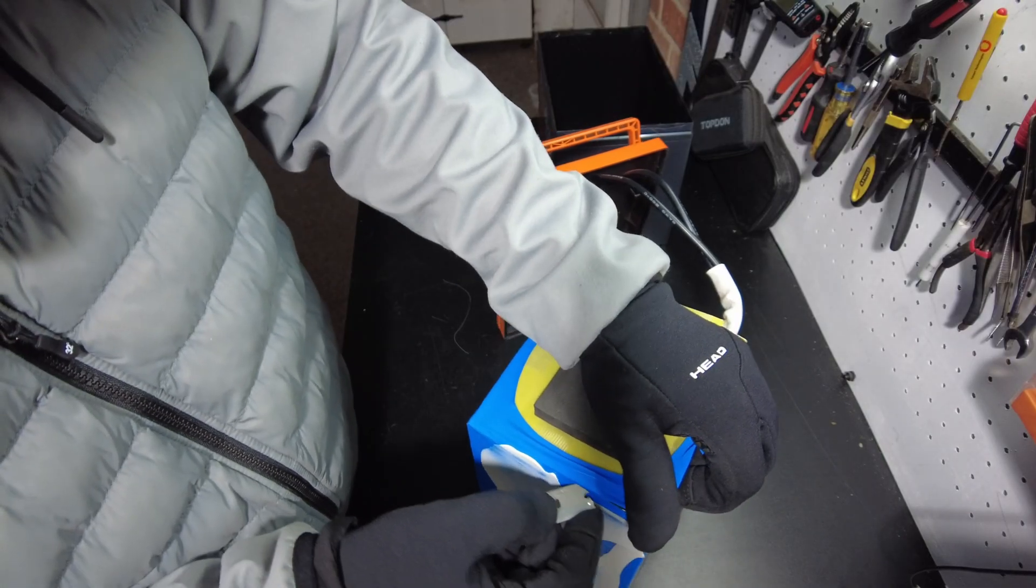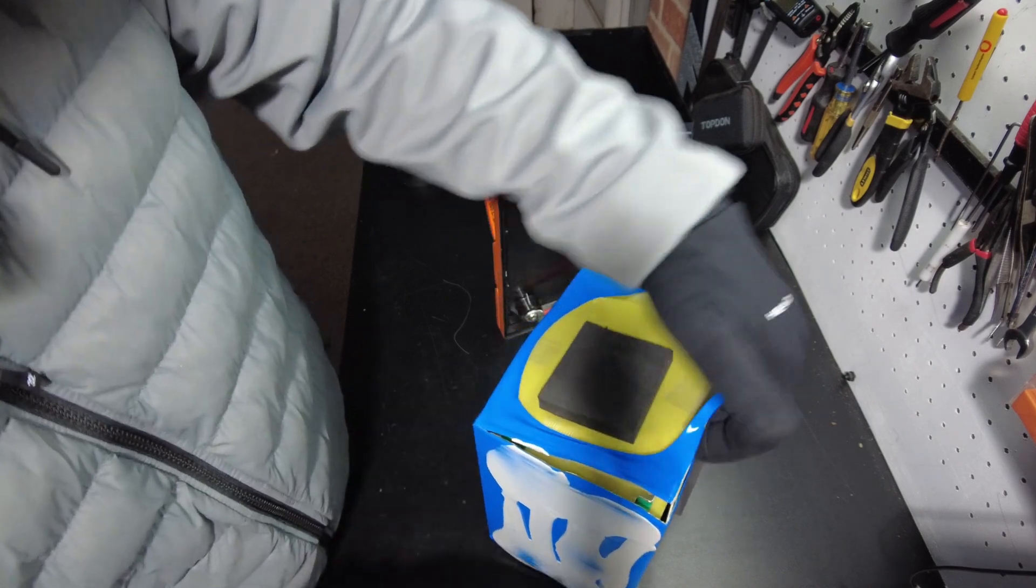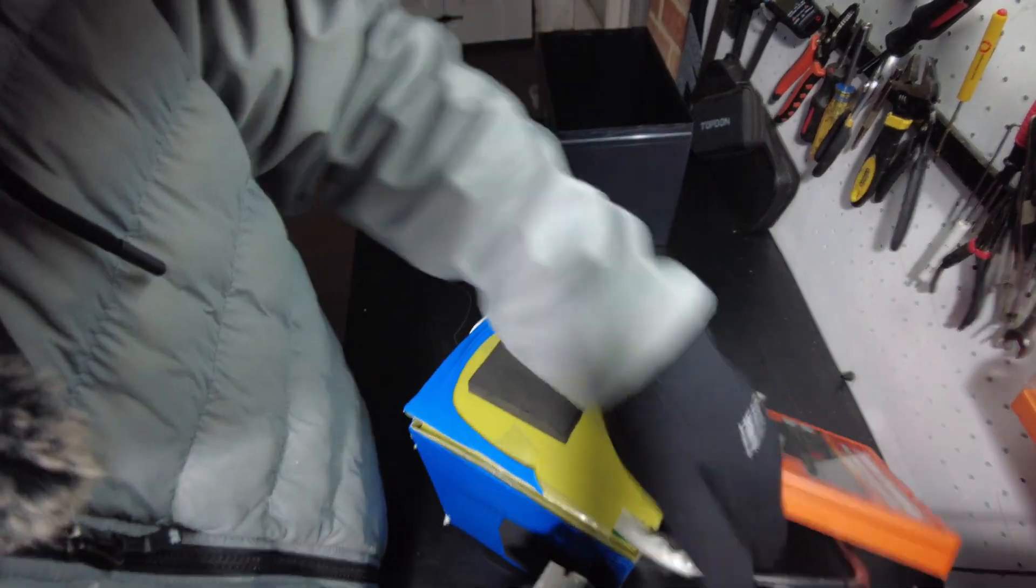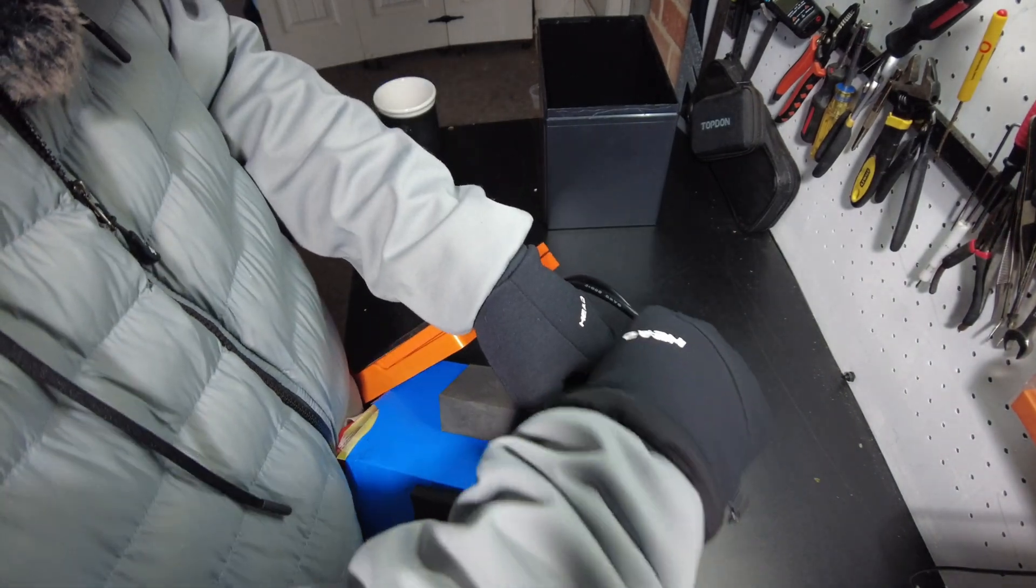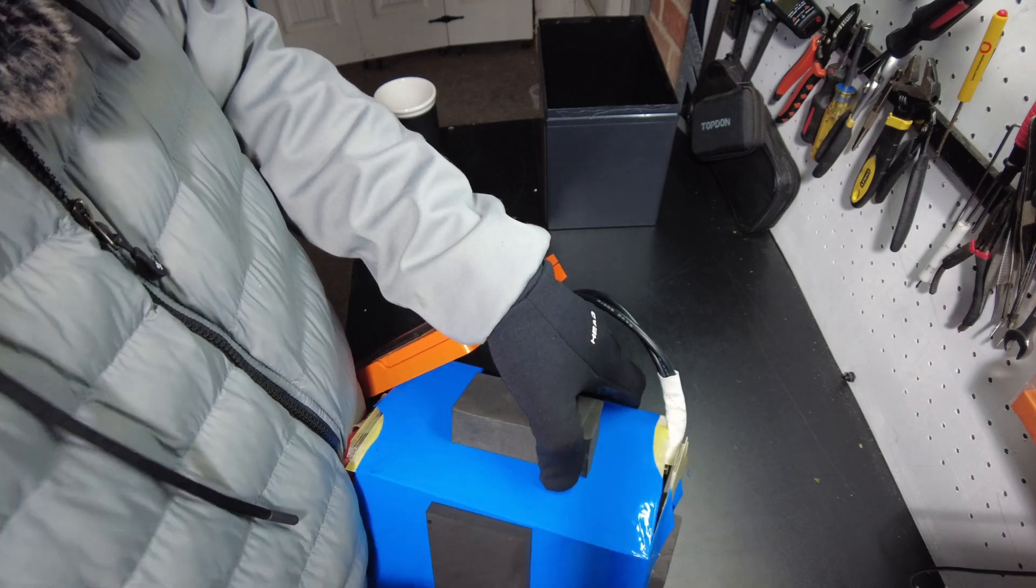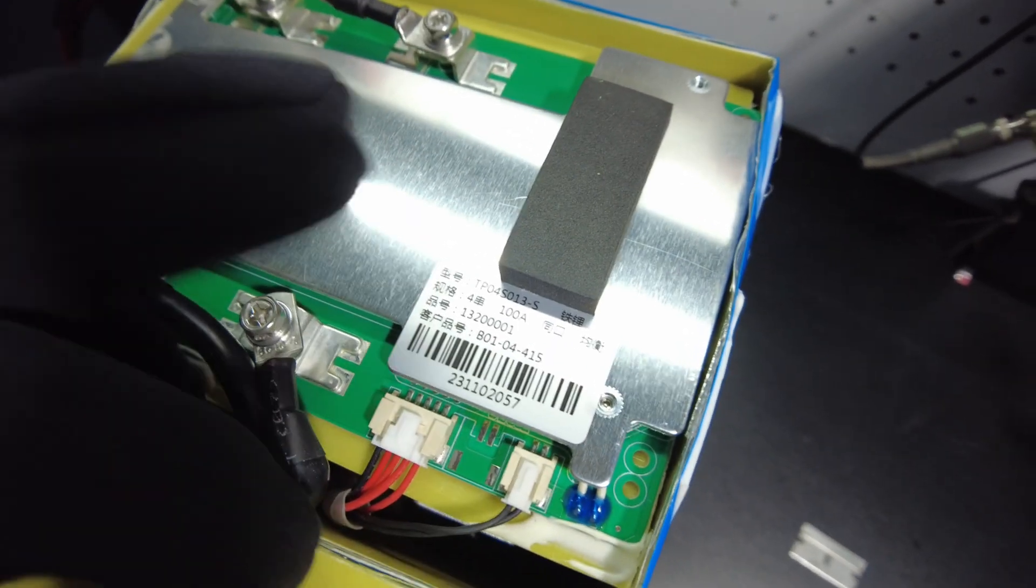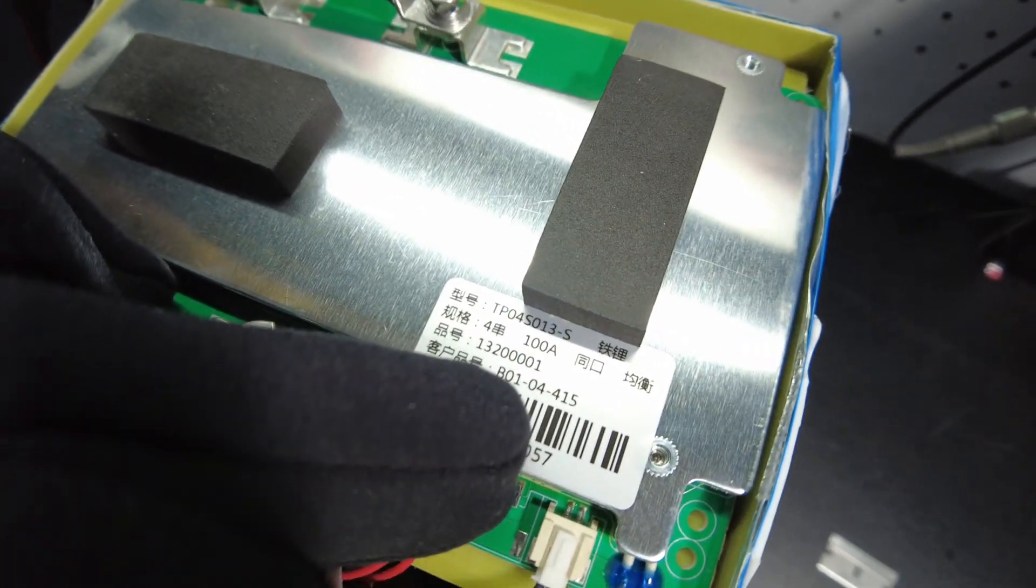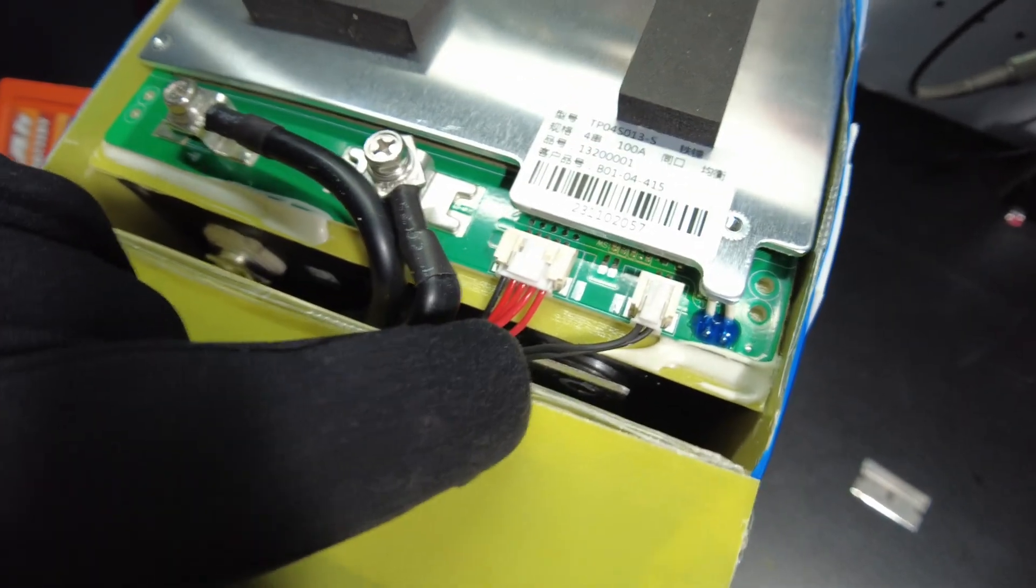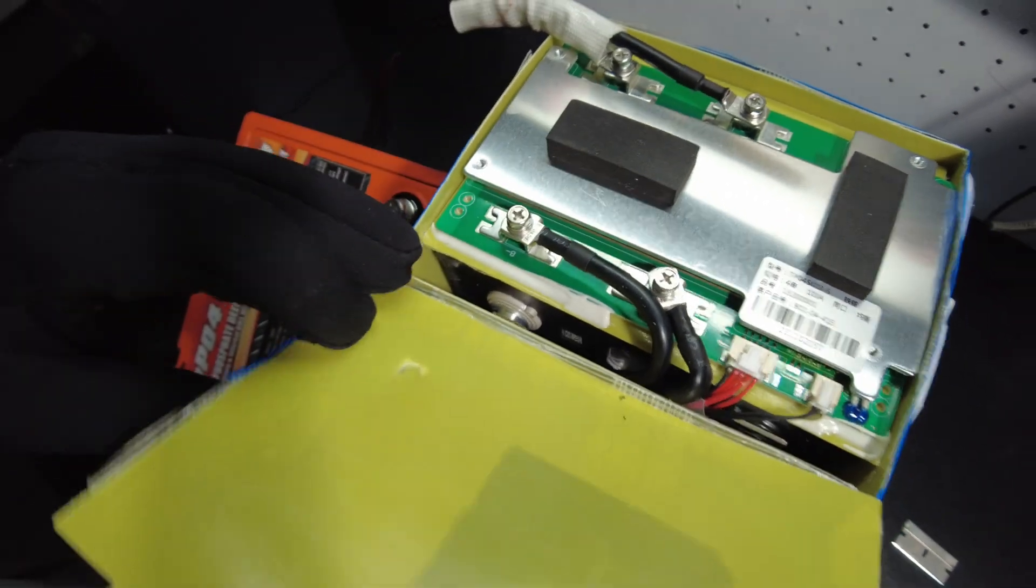Alright so our BMS is going to be on this side. Here we go. It says TP04S 013-S 100 amp. And it looks like we do have a thermal probe going down into the top of the cells there. So we might have to cut this open even more.